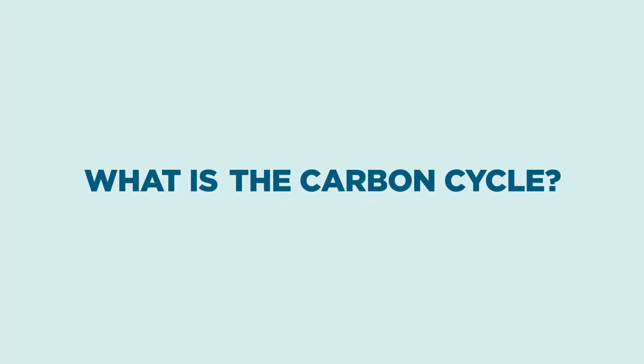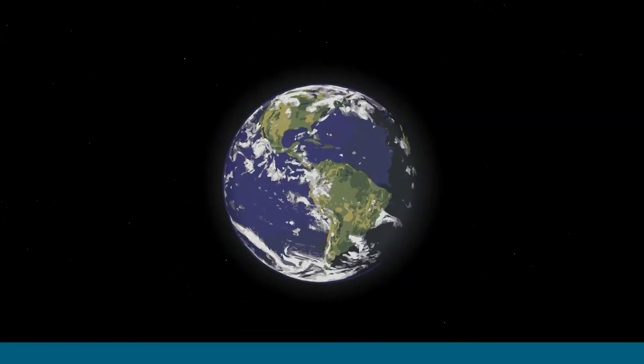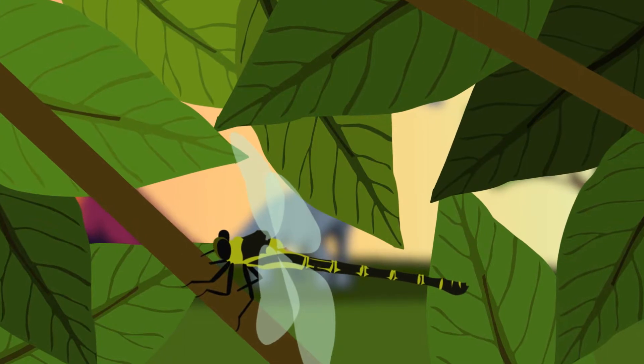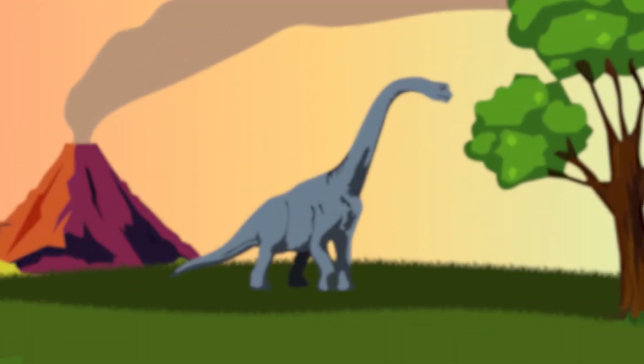What is the carbon cycle? Carbon is the chemical backbone of all life on Earth. All of the carbon we currently have on Earth is the same amount we have always had.